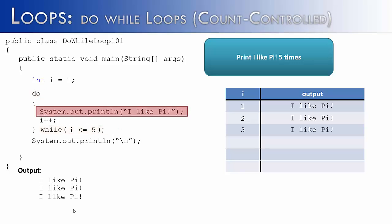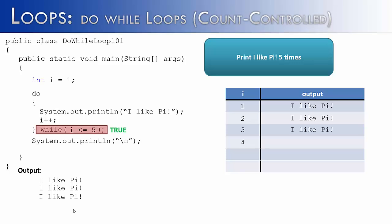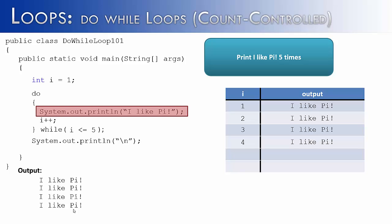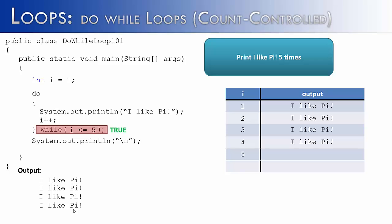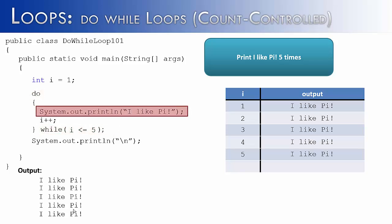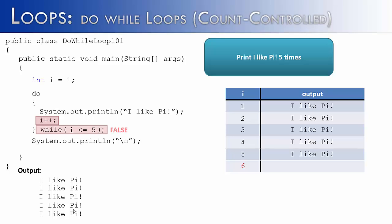Go to the do, print out 'i like pi' again. i is 4, i is less than or equal to 5 is true, go to the do, print out 'i like pi'. i++, then 5 is less than or equal to 5, so we run this one last time — go to the do, automatically enters, we get 'i like pi' one last time. i++ makes i 6, that's the exit condition, the condition is false, and therefore we have printed 'i like pi' five times.